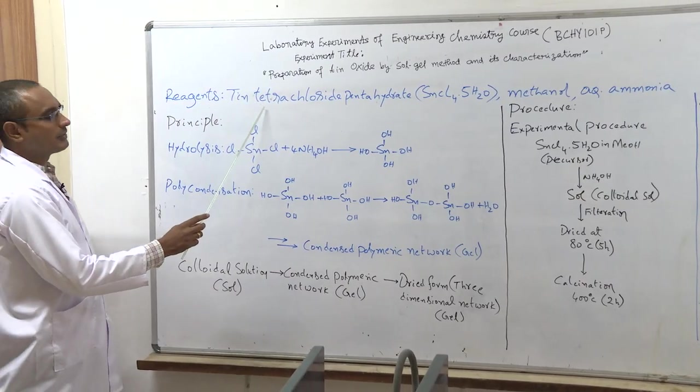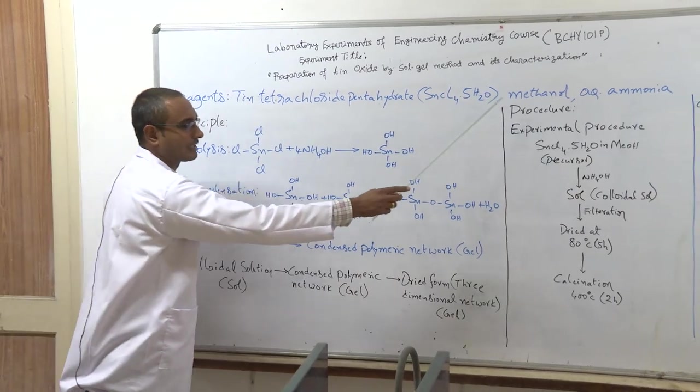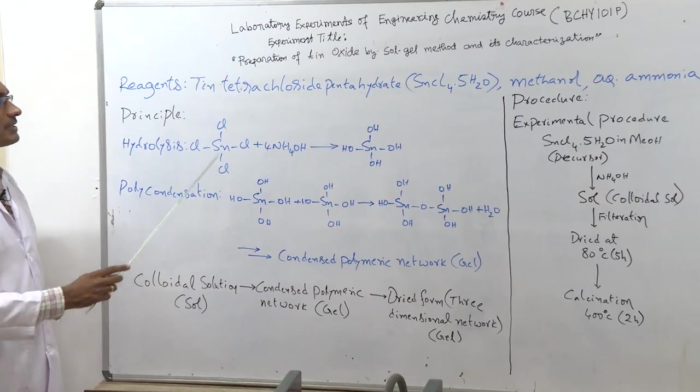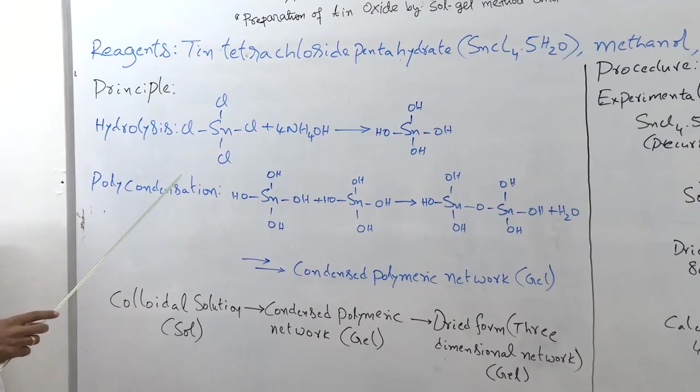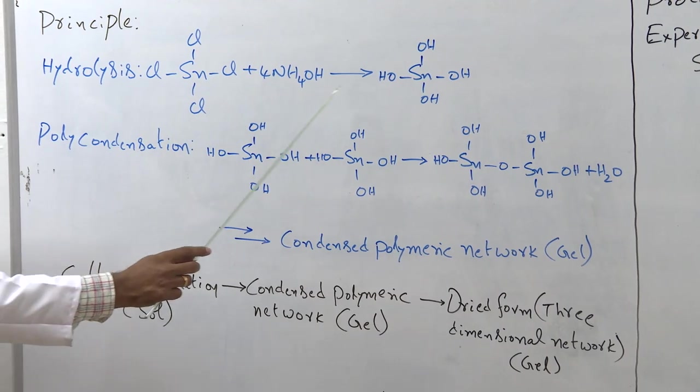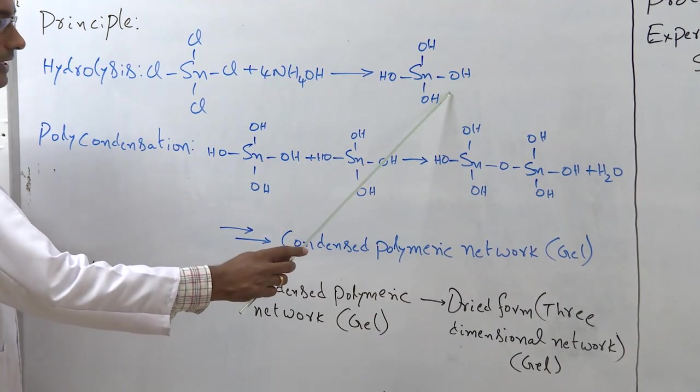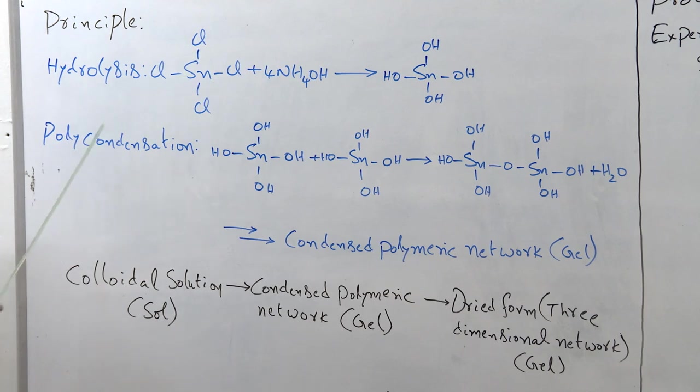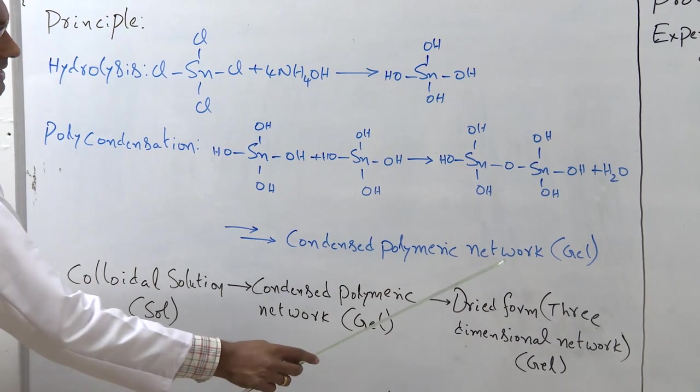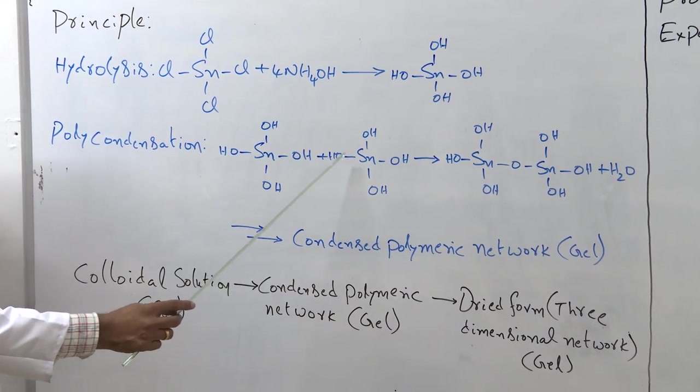And coming to the principal part. So we are going to dissolve tin tetrachloride in methanol. After that, we are going to add aqueous ammonia dropwise to the tin tetrachloride solution. The hydrolysis happens, the tin tetrachloride will convert into tin tetrahydroxide.